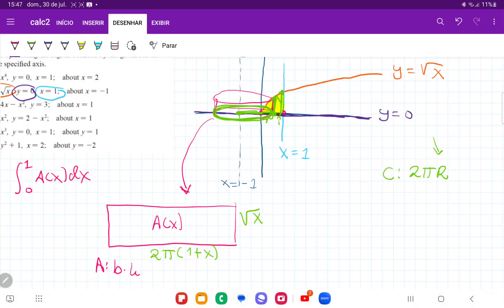And therefore, I have that my area is base times height. So the base is 2π times (1 + x) times height, which is x to the 1/2, root x. And so I'm just going to distribute this so I can integrate it easier. So that gives x to the 1/2, and then x times x to the 1/2 gives me x to the 3/2.